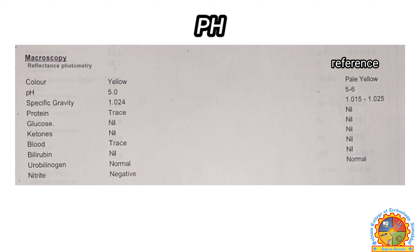Next, pH. The pH level is given as 5, which is normal, as the normal pH level of urine varies from 4 to 8.